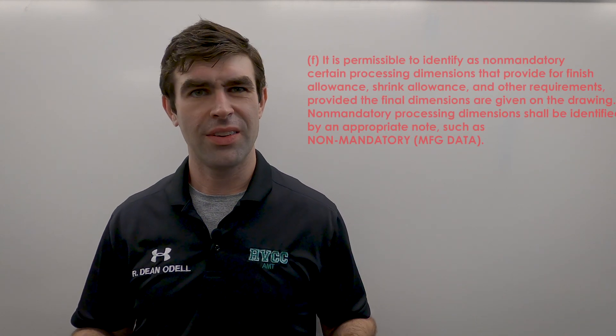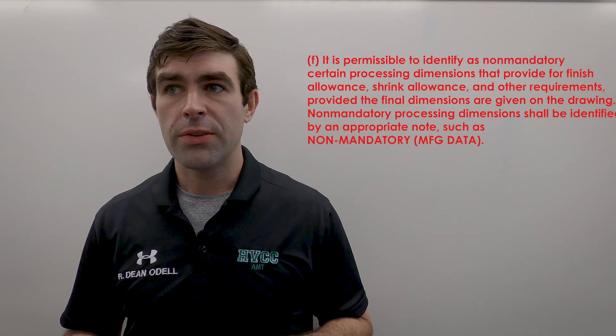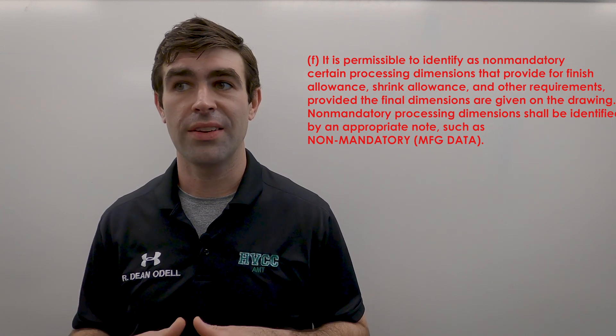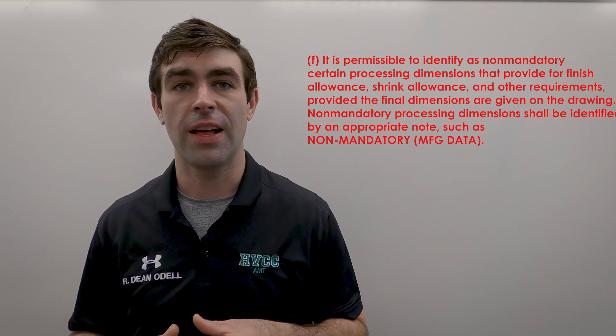Rule F: it is permissible to identify as non-mandatory certain processing dimensions that provide for finish allowance, shrink allowance, and other requirements, provided the final dimensions are given. This is just letting somebody know you did the math — here's where you should start, but this is where you have to end. The final dimensions must be on the part; the processing dimensions are non-mandatory and for information only.